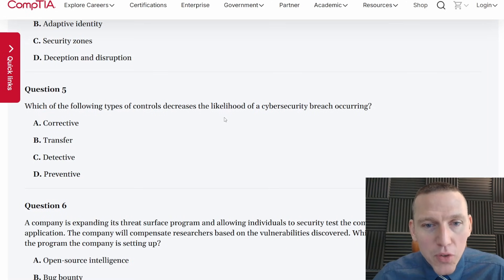Which of the following types of controls decreases the likelihood of a cybersecurity breach occurring. It could be talking about risk management strategies like mitigate. Let's take a look. Corrective transfer, detective, preventative. Corrective works to address a problem after it's happened. So that won't decrease the likelihood of something happening. Transferring is not even really a type of control. Detecting a control doesn't decrease the likelihood of a breach. We're just detecting that it would happen. So preventative control has to be the correct answer.